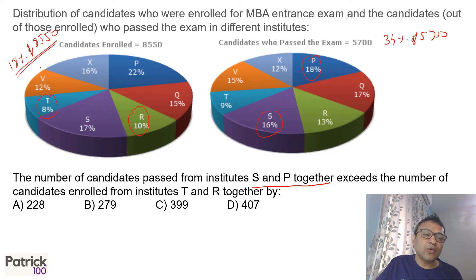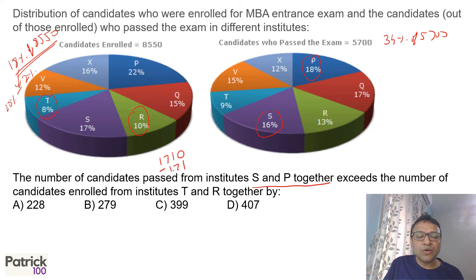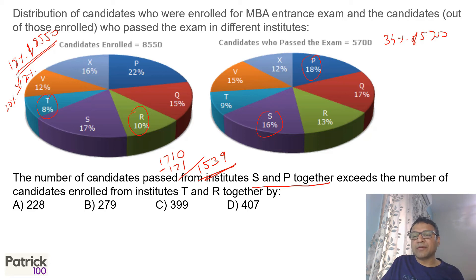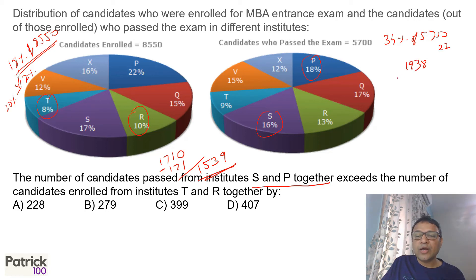If you're good at calculation this becomes easier. For 18% of 8,550: 18% is 20% minus 2%. 20% of 8,550 is 1,710. So 2% is 171, subtracted gives 1,539. Now for 34% of 5,700: 34 into 57 — 57 into 4 is 228, 57 into 3 is 171 — gives 1,938. So 1,938 minus 1,539 gives 399. You need to be decent in calculation for solving these sums.